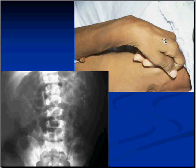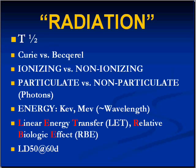Here's somebody with wrist drop, which is really due to a radial nerve neuropathy. Let's get into another type of exposure — radiation exposure. I spent many years of my life studying, writing, and diagnosing radiation-related things, and I'm going to summarize it in about 10 or 15 minutes.